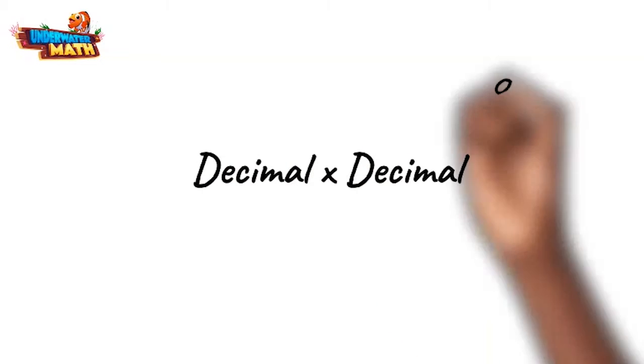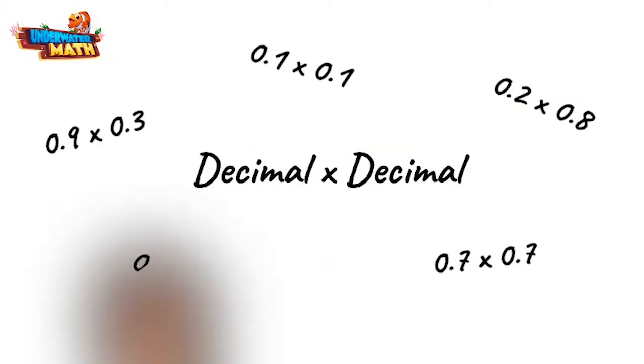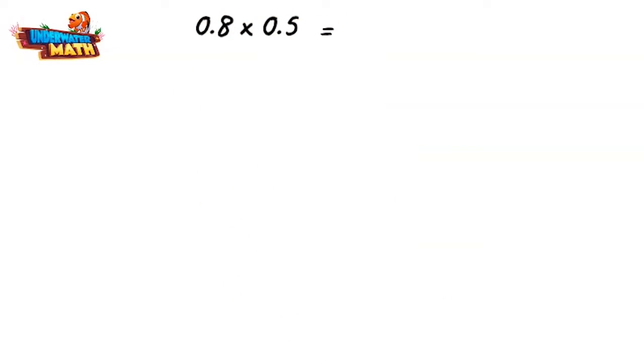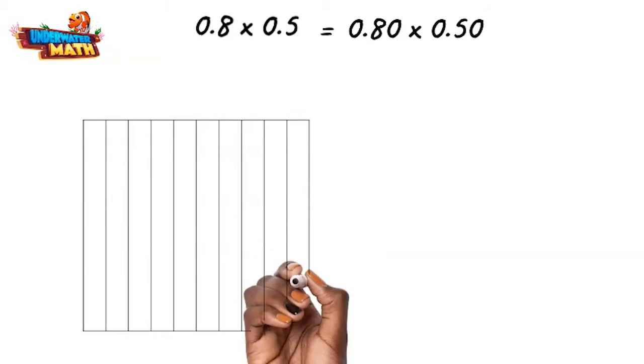First, let's multiply a decimal by another decimal. For instance, eight tenths multiplied by five tenths. This is equivalent to eighty hundredths multiplied by fifty hundredths. We can use a tenths grid to help us visualize our multiplication.